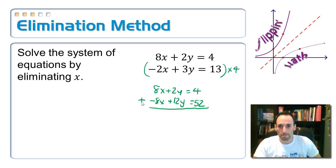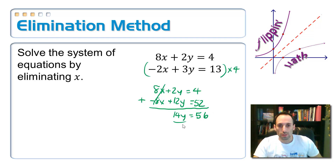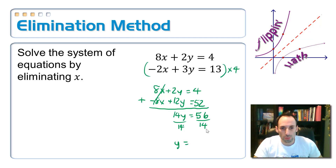Now let's add them up. The x's will cancel because they're opposites. I'd have 14y is equal to 56 when I add them. So let's divide by 14 — y is equal to 4.